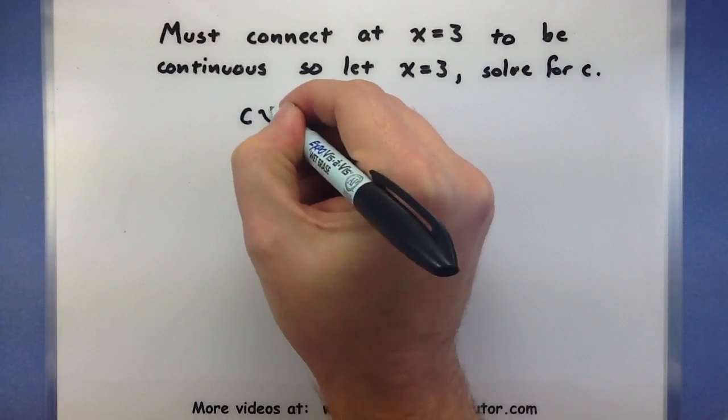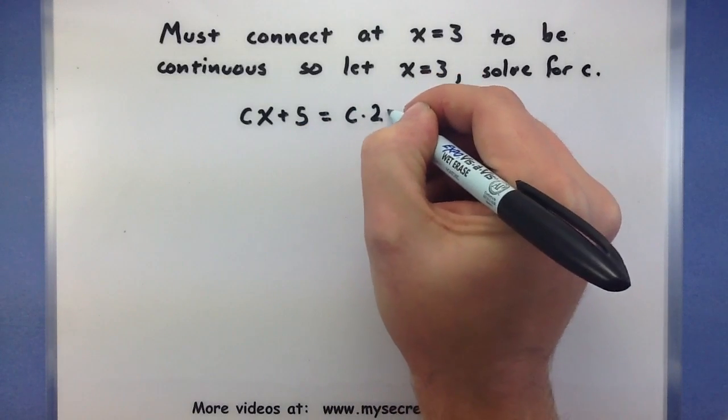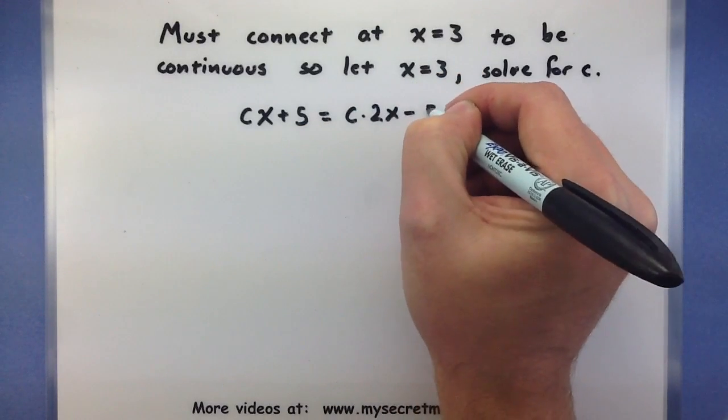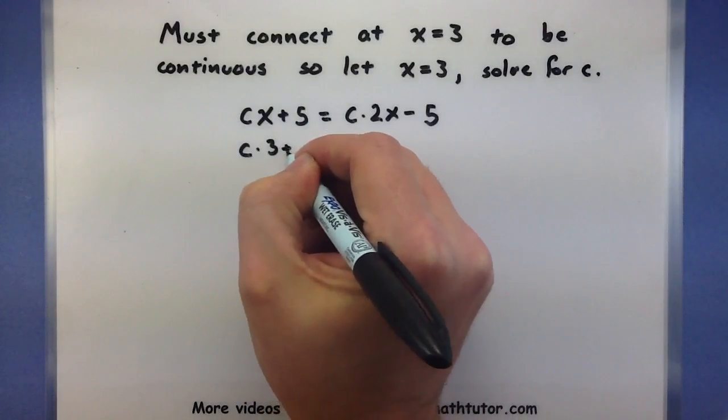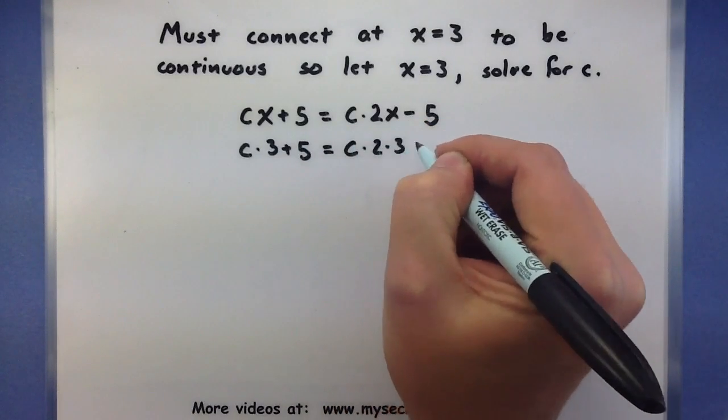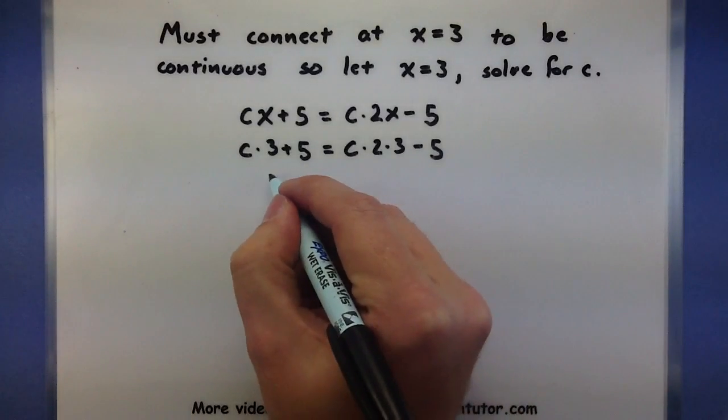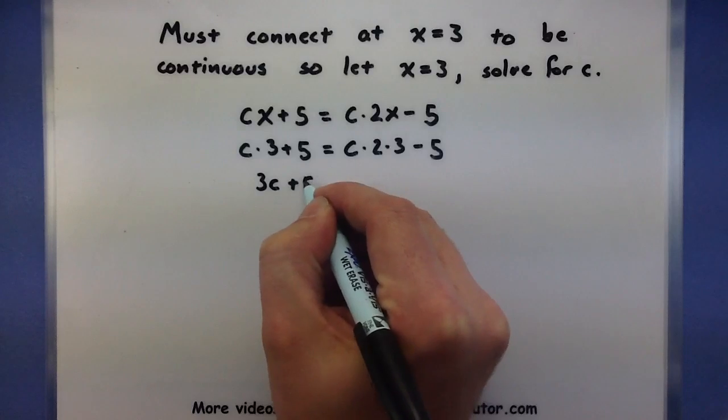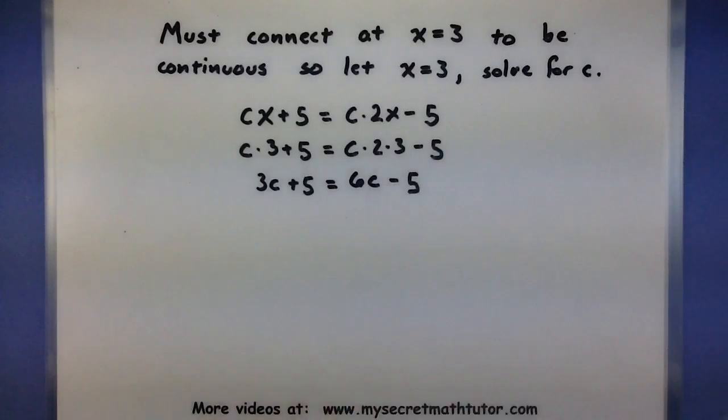So normally I have cx plus 5. I want it to equal c times 2x minus 5. So I want these things to line up at 3. Let's go ahead and put a 3 in there. Alright, so it looks like we essentially have to solve the problem 3c plus 5 equals 6c minus 5. Now from here it's a straight algebra problem. Get c isolated to one side and see what it's equal to.